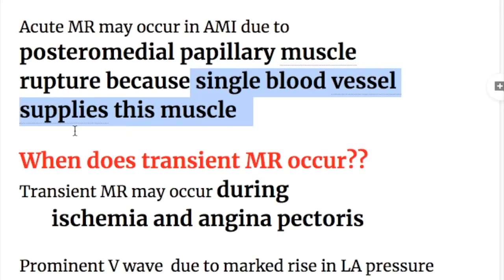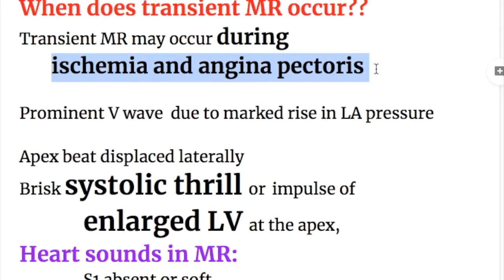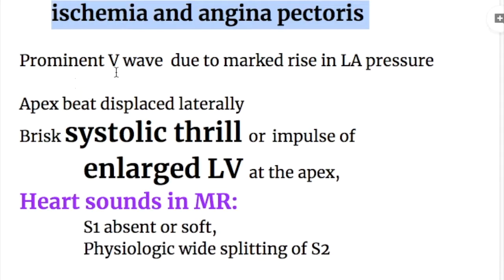When does transient mitral regurgitation occur? Transient mitral regurgitation may occur during ischemia and in angina pectoris. There is a prominent V-wave due to a marked rise in left atrial pressure.